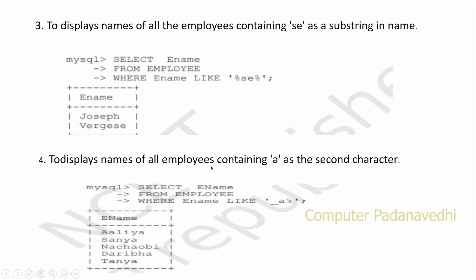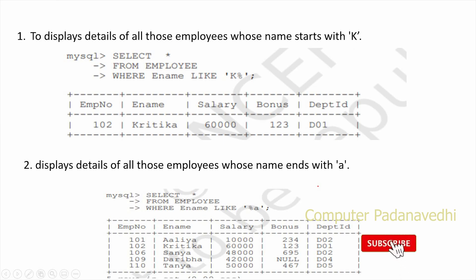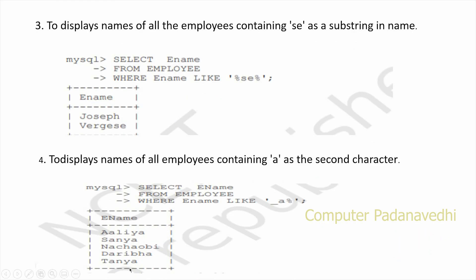To display names of all employees containing 'A' as the second character: SELECT name FROM employee WHERE name LIKE '_A%'. The first underscore matches one single character, then A is the second character, and the percentage matches the rest.